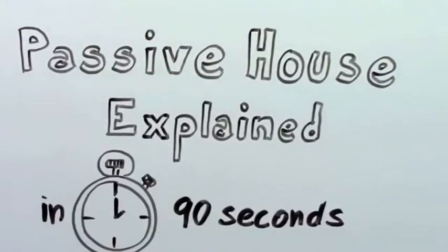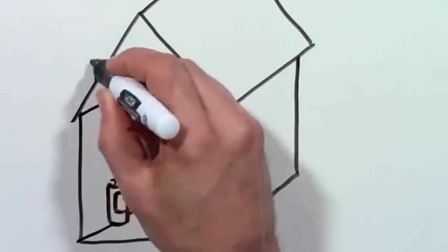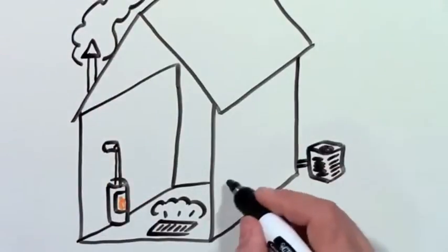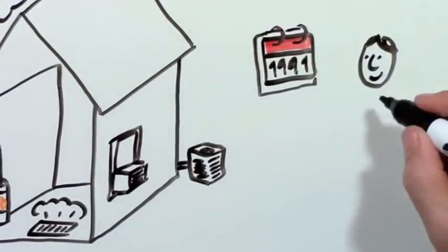Passive House explained in 90 seconds. Does your house have a heater in the basement or maybe a fireplace? Probably also a central air conditioner or maybe a window unit. Did you ever wonder if it was necessary?